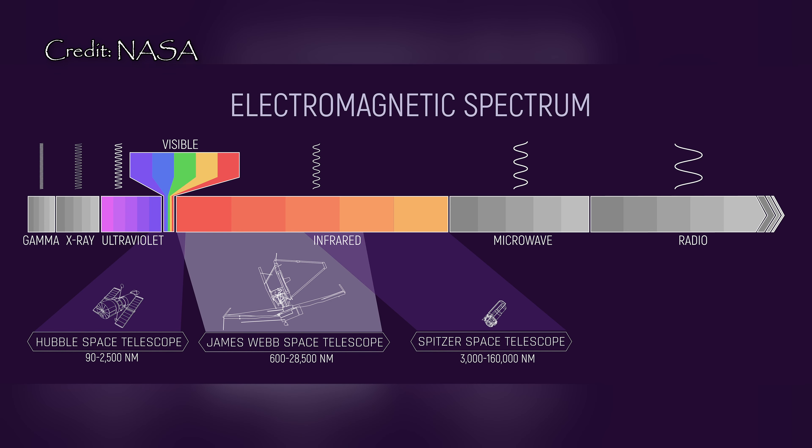Before we proceed, let's quickly visit the electromagnetic spectrum. Light exists in many different wavelengths, with the longest of these being radio waves and the shortest being gamma waves. Only a small subset of these sit in the visible part of the electromagnetic spectrum.